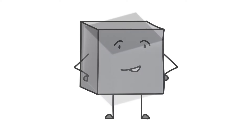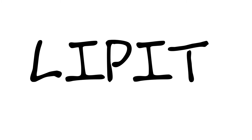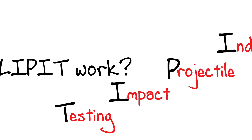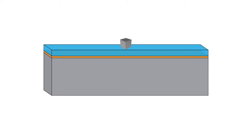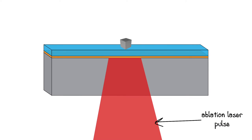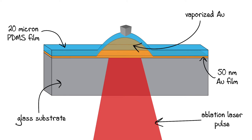We use silver microcubes as the model system and shoot them at supersonic velocities using LIPIT, laser-induced projectile impact testing. How does LIPIT work? Gold vapor is produced by laser ablation between a glass substrate and a layer of polymer to locally expand the polymer in a fraction of a second to launch the projectile.